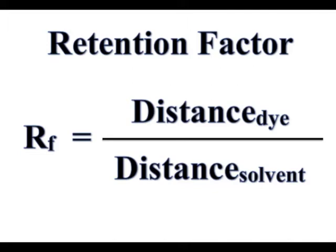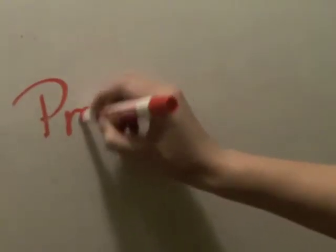That is why we can calculate what is called a retention factor for each color component. After measuring the distance the component traveled and the distance the solvent traveled, we can use this equation to compare the different components. But we can come back to calculations later.